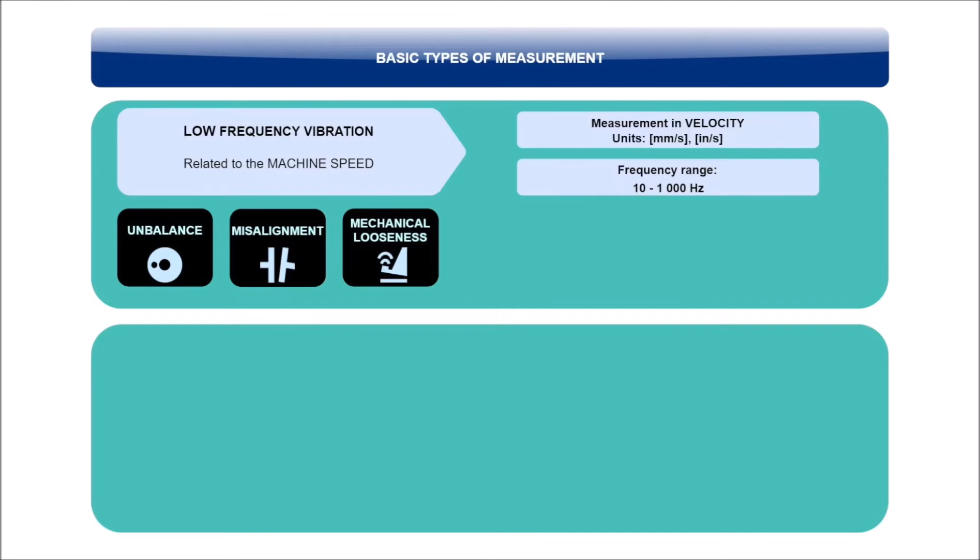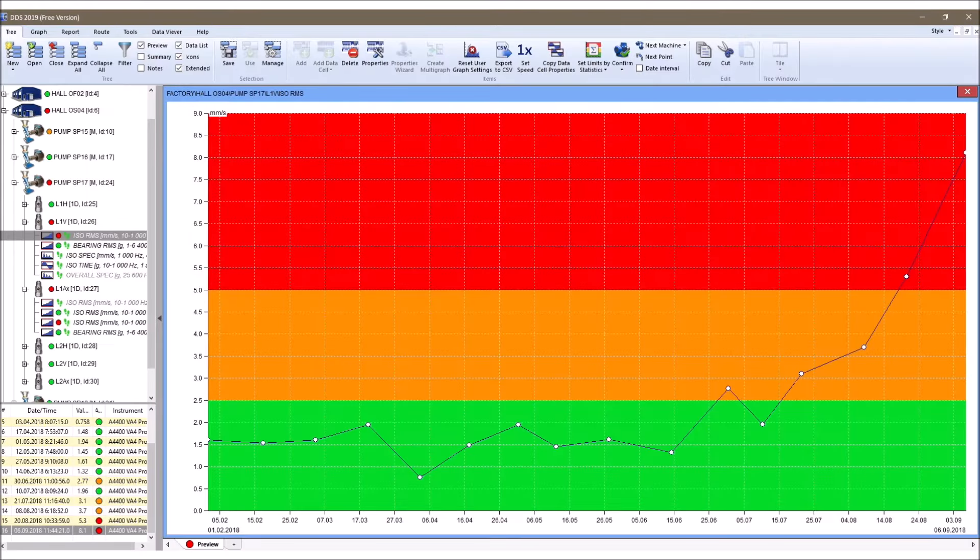This way we came to the conclusion that to monitor mechanical vibrations related to the shaft speed of the machine, we will use the measurement of overall velocity in millimeters per second or inches per second in the range of 10 to 1000 Hz. This measurement is represented by one number. Using the ADASH DDS software, we can trend this value in time and see its development.